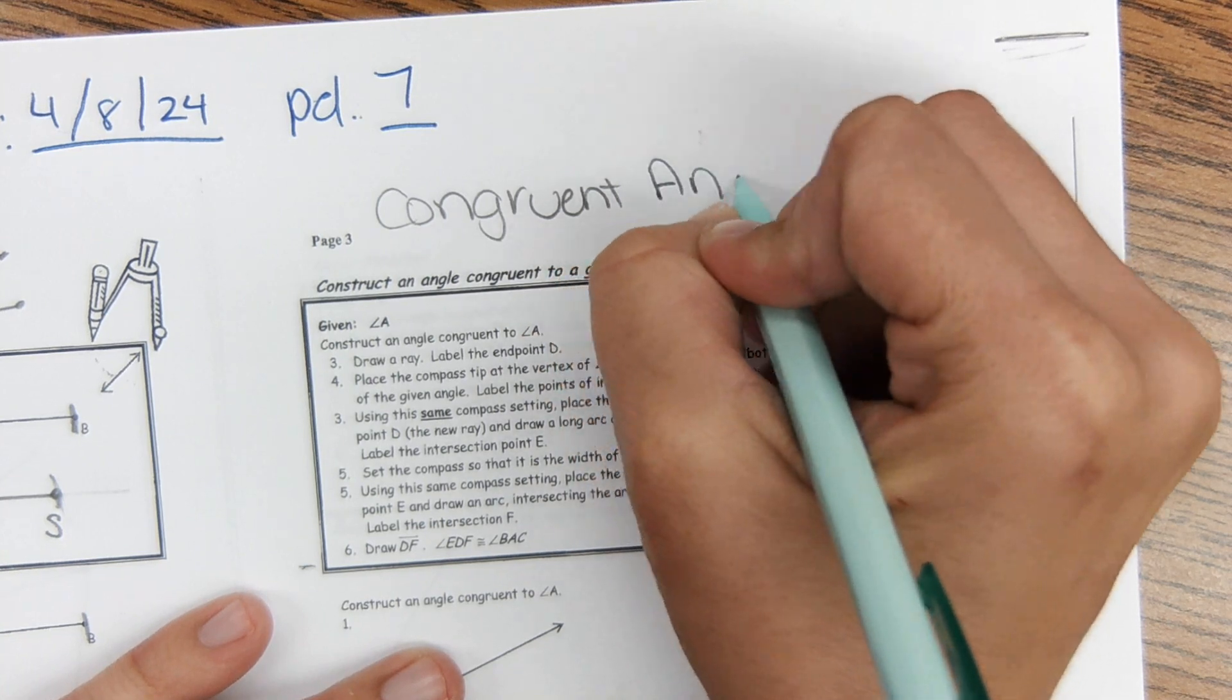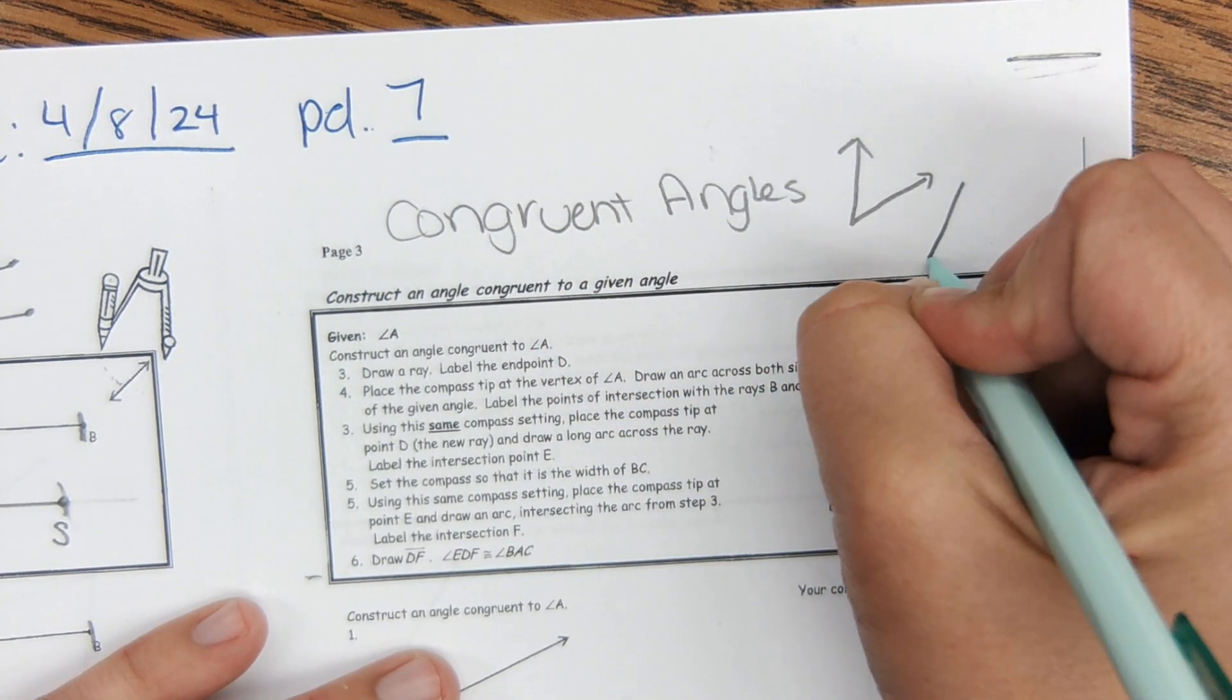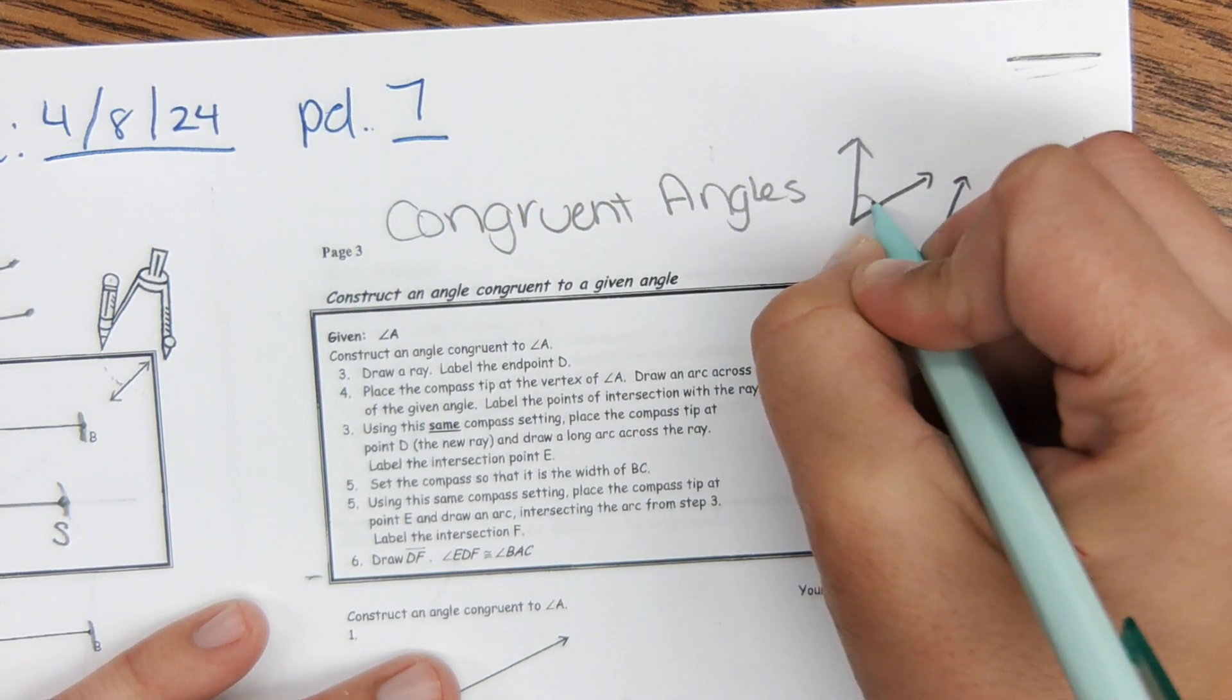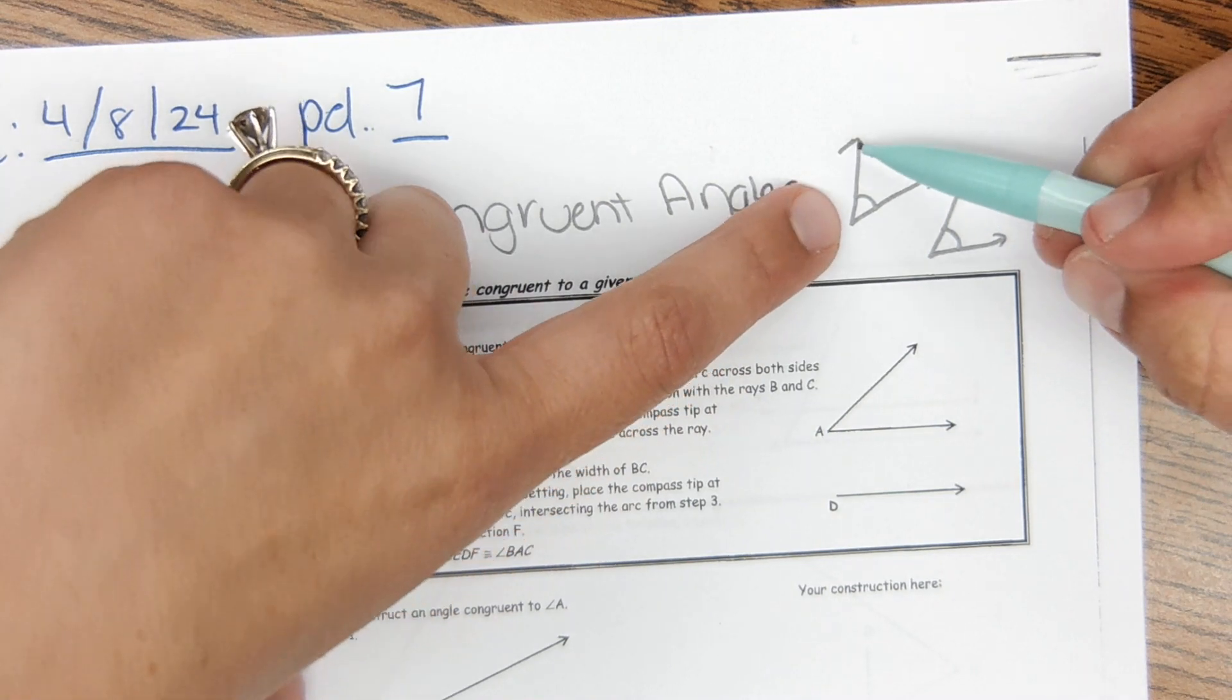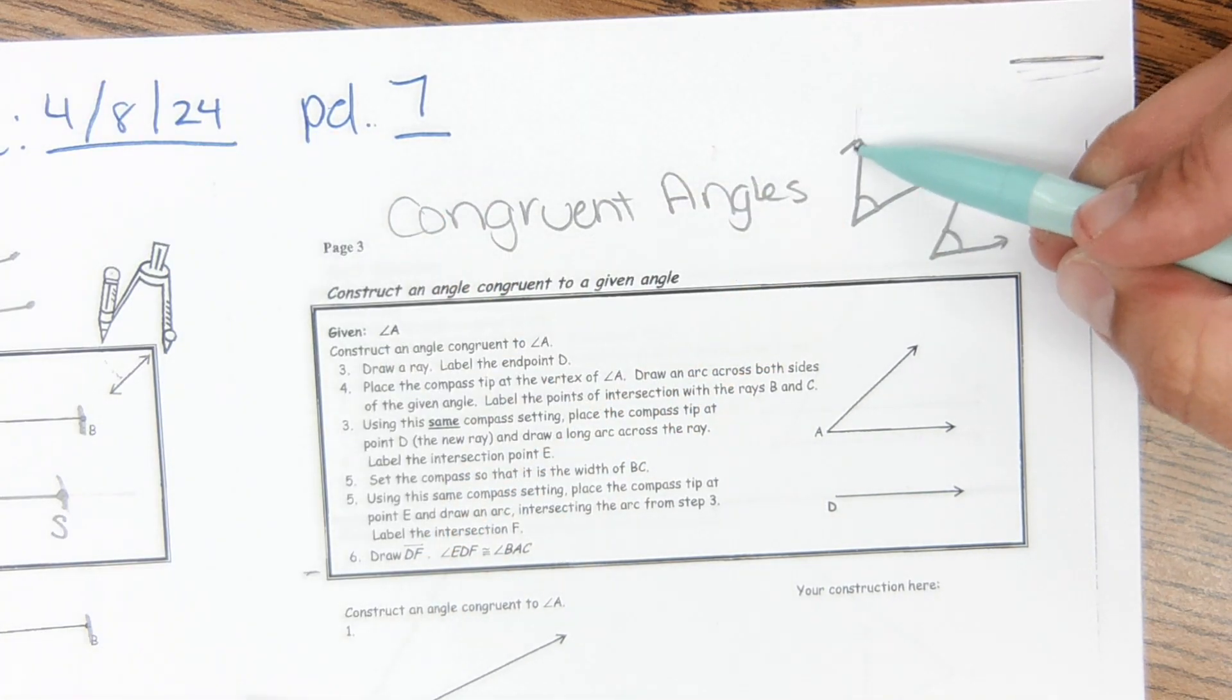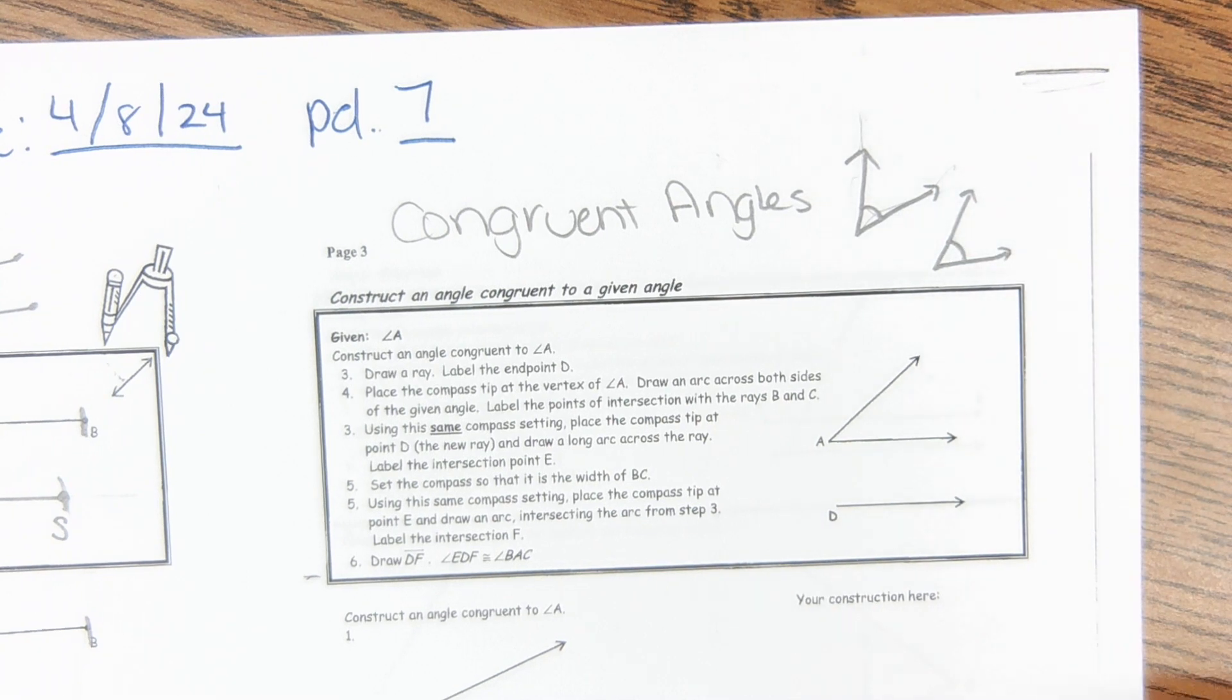Congruent angles. So congruent angles have the same degree measure, same opening with the angle. The rays on an angle go on forever and ever, so we don't need to draw those the same length, but we do need to make sure that the opening is the same for both of the angles.